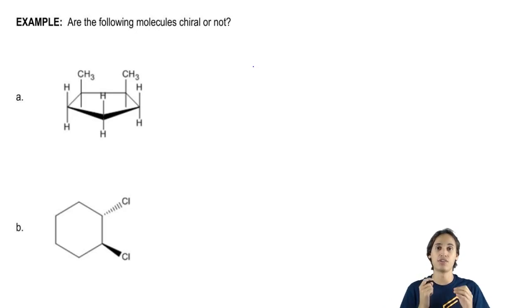So go ahead and see if you can find an internal line of symmetry. If you can, go ahead and draw it with a dotted line.